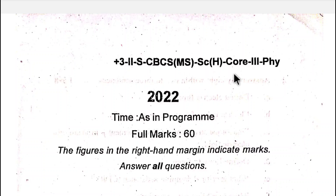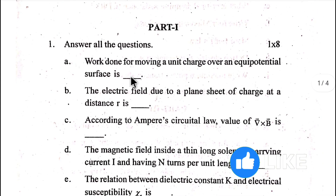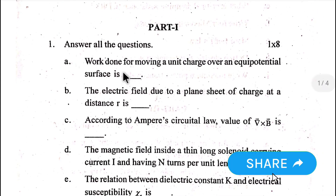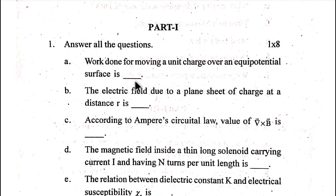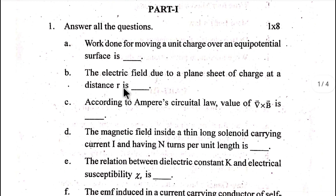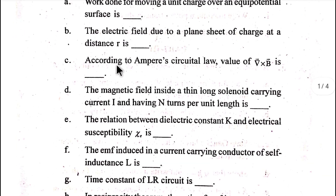Physics Honours, Code Three, Second Semester. Number one: Work done for moving a unit charge over an equipotential surface is dash. The electric field due to a plane sheet of charge at a distance r is dash.